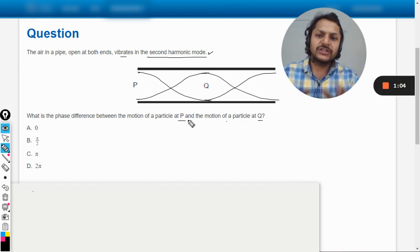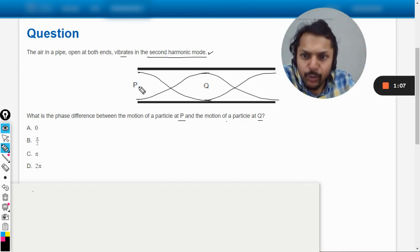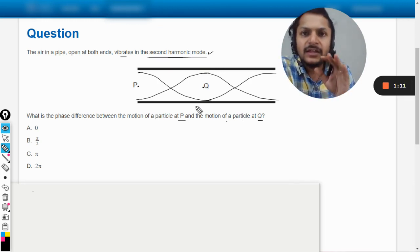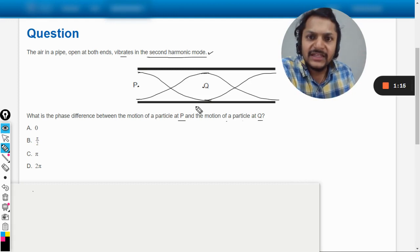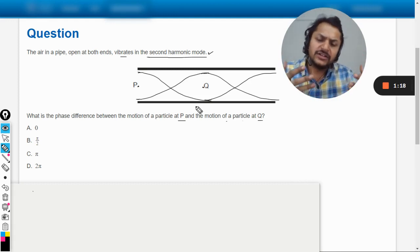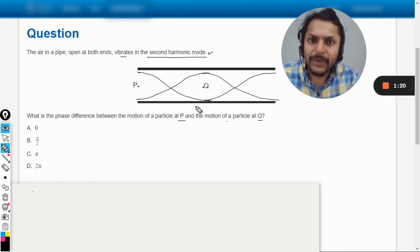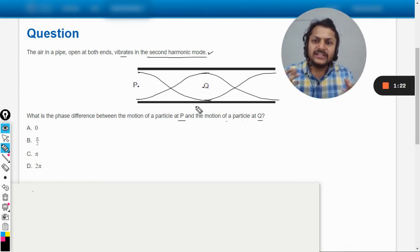So this is the second harmonic and now you can see that the point P and the point Q, they are in the adjacent lobes, in the adjacent harmonic you can say, or adjacent segments.